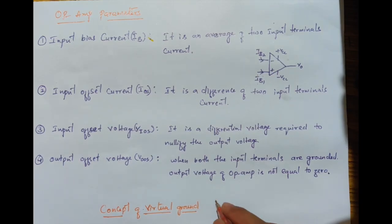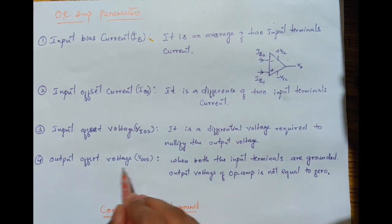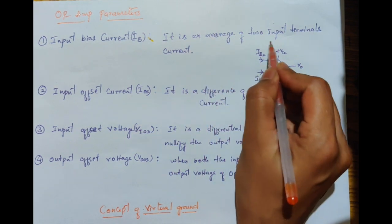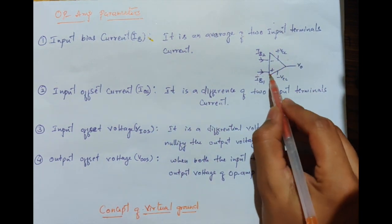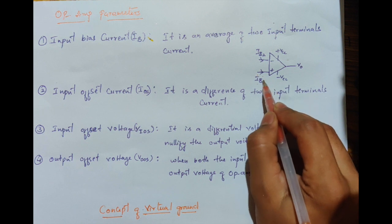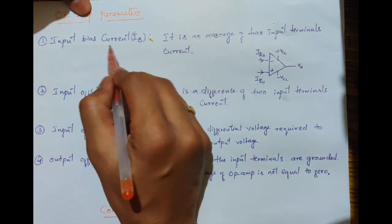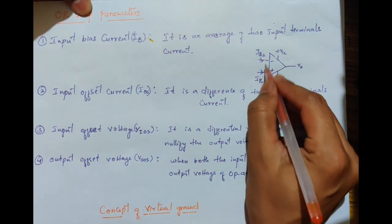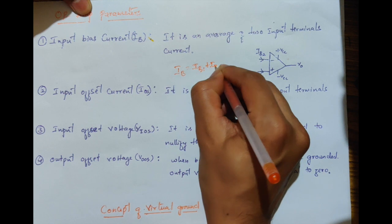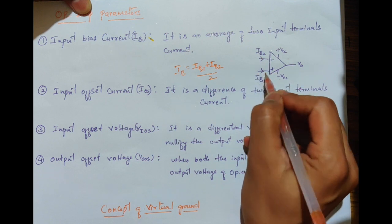Next we will see op-amp parameters. There are four parameters: input bias current, input offset current, input offset voltage, and output offset voltage. Input bias current is the average of the two input terminal currents. The op-amp has two terminals: non-inverting with current IB1 and inverting with current IB2. The input bias current IB is equal to (IB1 + IB2) / 2, the average of the two input terminal currents.